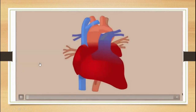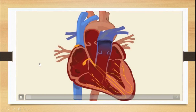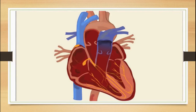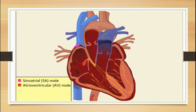The pumping action of the heart is controlled by the heart's electrical system. The heart contains specialized cells that can generate electrical impulses and send them to the cardiac muscles, causing them to contract. The cardiac conduction system is mainly made up of 5 elements: the sinoatrial (SA) node, the atrioventricular (AV) node, the bundle of His, the bundle branches, and the Purkinje fibers.